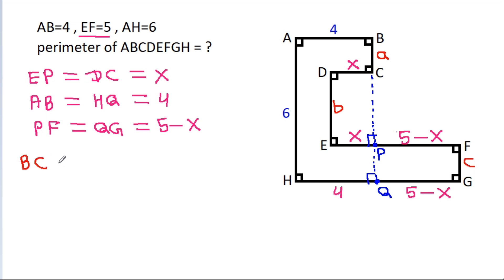Then BC minus DE minus FG will be equal to AH. BC is a, minus DE is b, minus FG is c equals AH, which is 6.